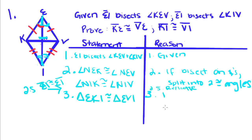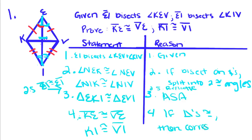And now we can say that the triangles are congruent by angle, side, angle. And now, that must mean that KE is congruent to VE, and KI is congruent to VI, because if triangles are congruent, then the corresponding parts are also congruent.